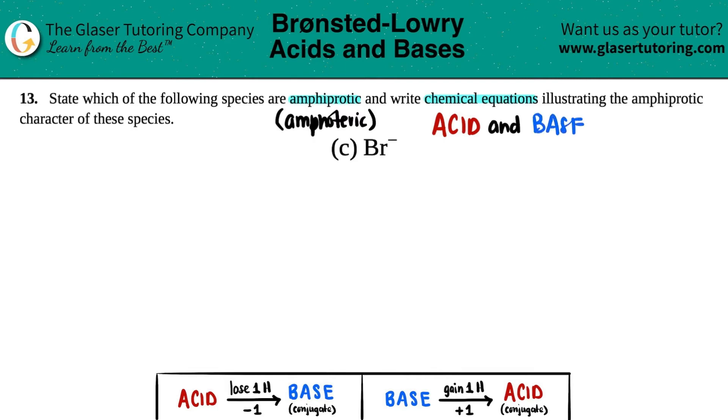It just depends on a certain situation. Now, how are we going to know if Br minus is amphiprotic or amphoteric? Well, we have to go by the definition of what a Bronsted-Lowry acid-base is.